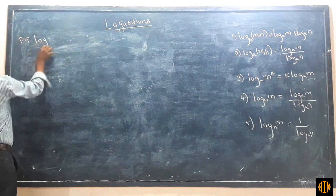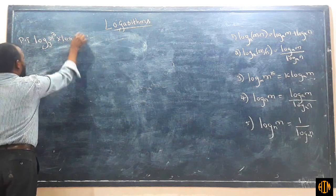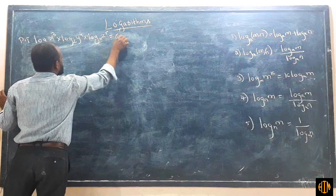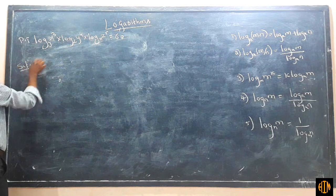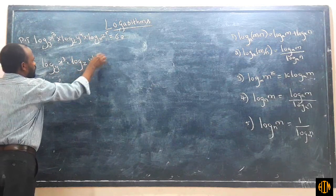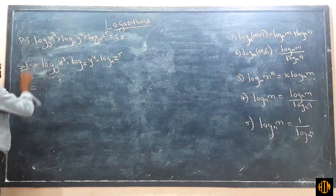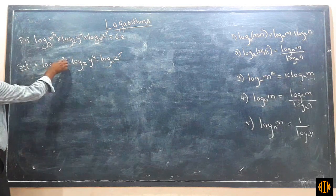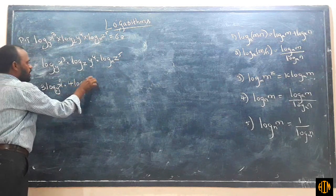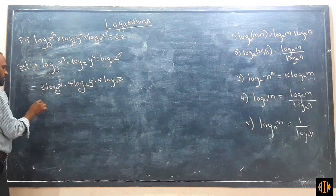Question 1: Prove that log x³ base y × log y⁴ base z × log z⁵ base x equals 60. Using Law 3 (power law), this becomes 3 log x base y × 4 log y base z × 5 log z base x, and 3 × 4 × 5 equals 60.